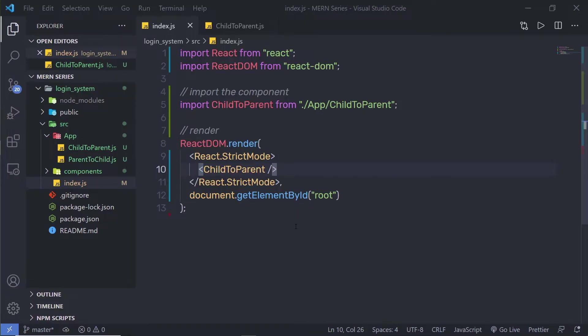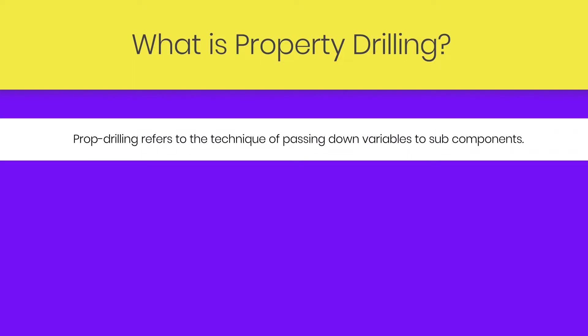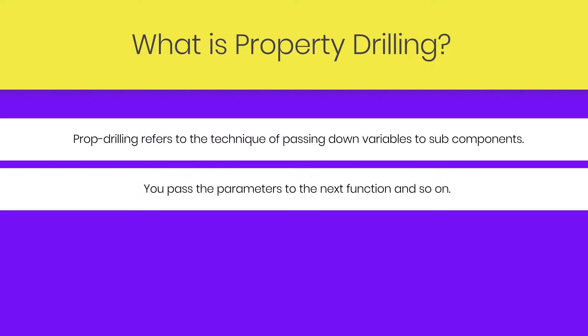In the second method, we use React Context API to pass data through siblings. The major advantage of Context API is that you save the developer from prop drilling. Prop drilling refers to the technique of passing down variables to the subcomponents — the main idea of functional programming, where you pass values to the next function and so on. We have done the same thing in the parent-to-child component example. But there is a better way to do this using Context API. For now, let's understand the example of prop drilling.